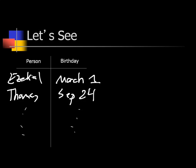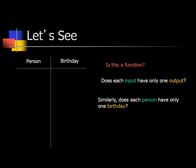Does anybody have two birthdays? No. Every person only has one birthday as an output, no matter who you list. Two people could share the same birthday — like if Carlos had the same birthday as Thomas — but Carlos still only has one birthday and Thomas still only has one birthday. So each input has one output. That would be a function.